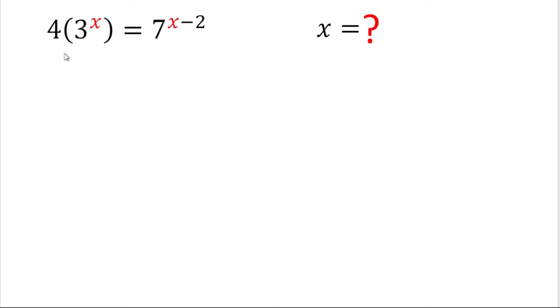Hello friends and welcome back. Today in this video we are going to solve this very interesting problem of algebra. The problem here is 4 times 3 to the power x equals 7 to the power x minus 2. Then we'll have to find the value of x.